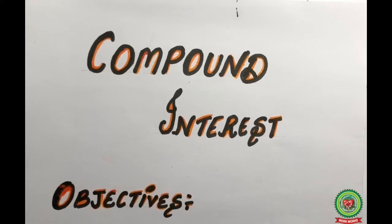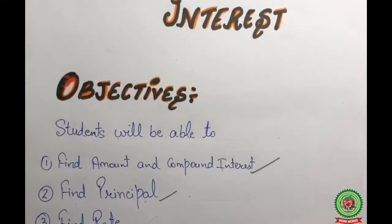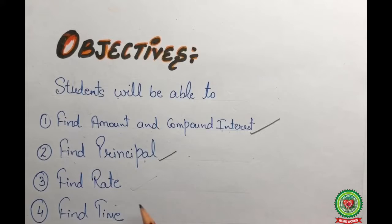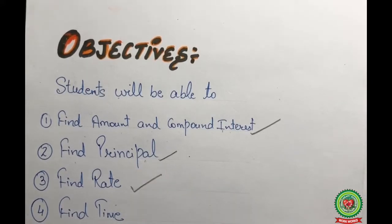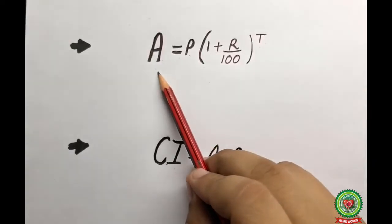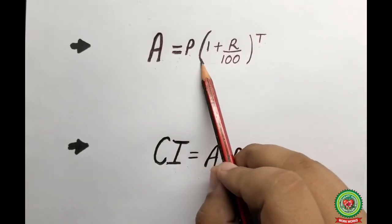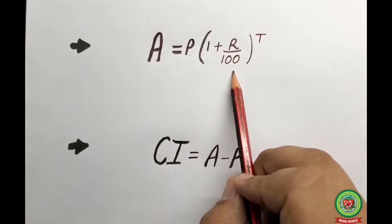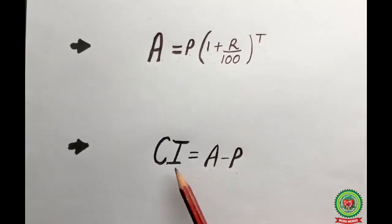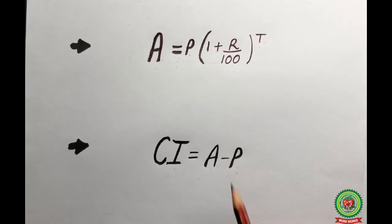Hello students, welcome back for another video on the topic of compound interest. In this video we are going to discuss how to find rate when amount, principal, and time are given to us. Before discussing, let us have a recap of the formulas: Amount = Principal × (1 + r/100)^t, and Compound Interest (CI) = A minus P.